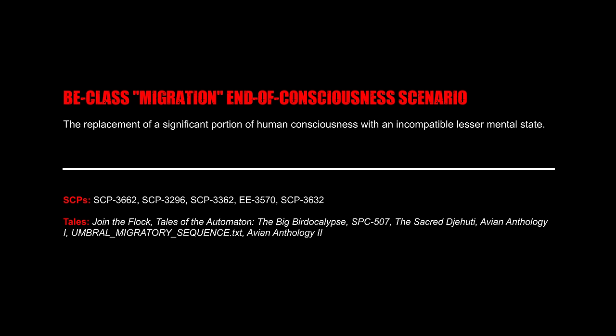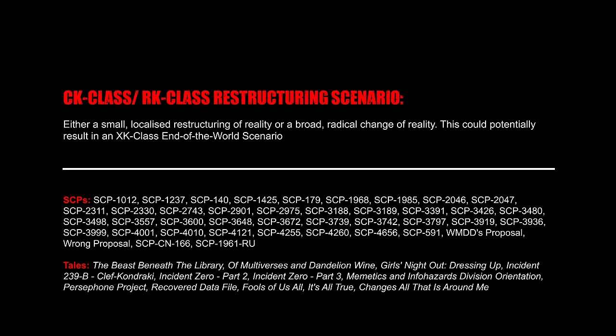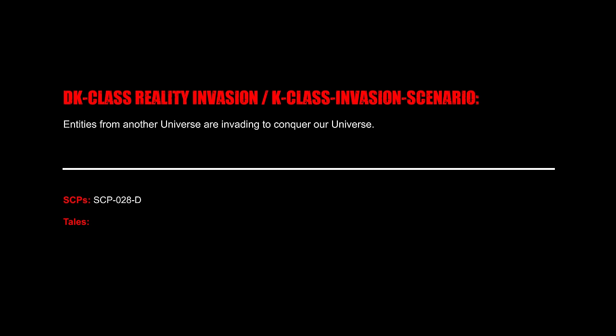BB Class Universal Formation Events: The creation of the universe in a Big Bang scenario. BC Class Universal Collapse Events: The natural end of the universe in a Big Crunch scenario. BE Class Migration End of Consciousness Scenario: The replacement of a significant portion of human consciousness with an incompatible, lesser mental state. CK/RK Class Restructuring Scenario: Either a small localized restructuring of reality or a broad radical change of reality, potentially resulting in an XK Class End of the World Scenario.